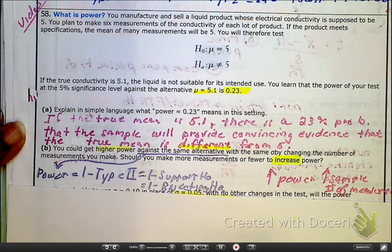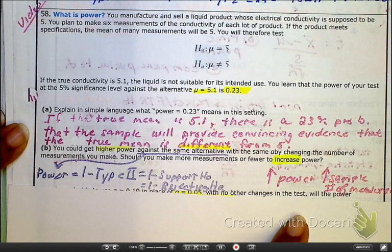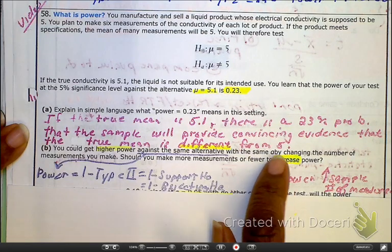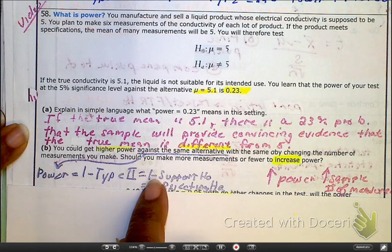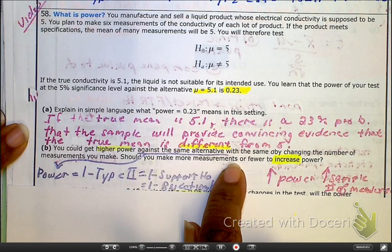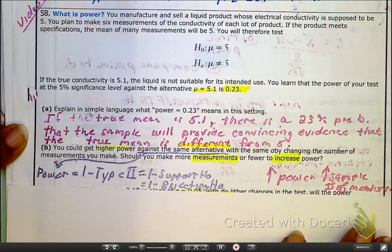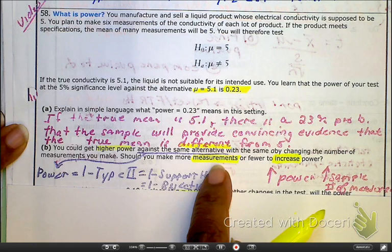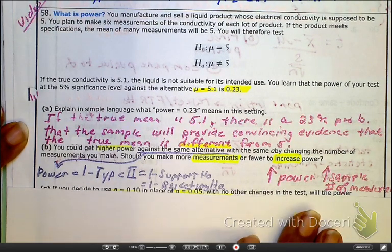Remember, there's a couple ways to increase the power. You increase the sample size, and you increase the alpha. But in this particular situation, we're talking about the idea of measurements. With that being said, we're not talking about the alpha. They're specifically talking about measures, so we need to increase the number of measurements.